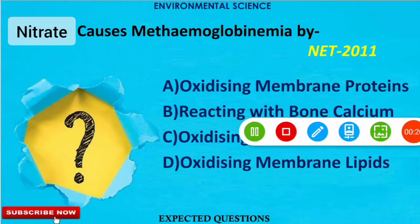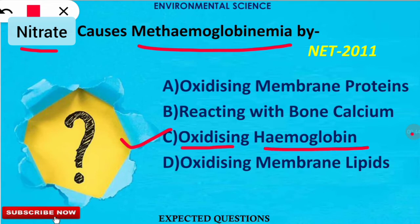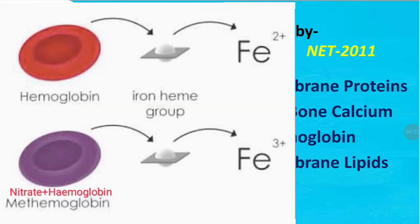The first question is: nitrate causes methemoglobinemia by which of the following methods? Nitrate is the reason for methemoglobinemia and the correct option is option C. These nitrates oxidize the hemoglobin present in our blood, resulting in the formation of a different kind of hemoglobin called methemoglobin. This results in the formation of Fe3+ ions instead of Fe2+.